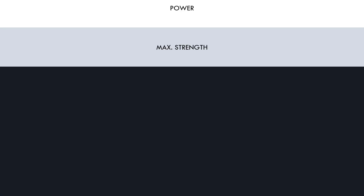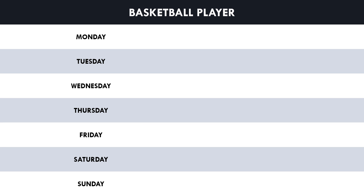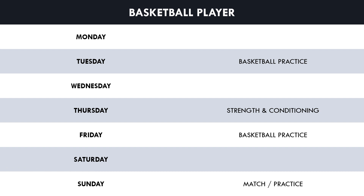Let's now lay out the complete week to see the final microcycle of training. For our basketball example, this athlete has basketball practices on Tuesday and Friday, a competitive match or additional practice match on Sunday, and strength and conditioning sessions on Thursday. In the next video, we will take this microcycle and apply progressive overload to create a mesocycle of training.